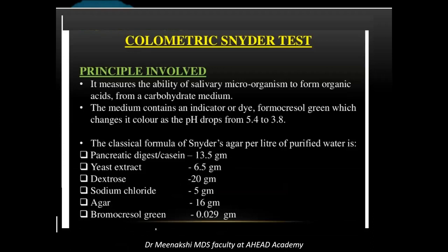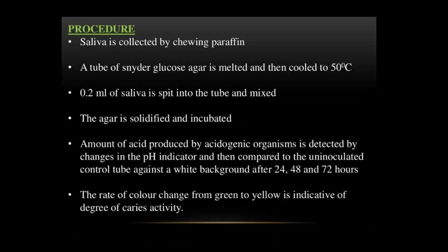Next comes the Nider colorimetric test. It measures the ability of salivary microorganisms to form organic acids from a carbohydrate medium. The classical formula of Nider agar per litre of purified water contains: casein or pancreatic digestive juice, yeast, dextrose, sodium chloride, agar, and bromocresol green medium — which contains the indicator dye. This dye, bromocresol green, changes its color when pH drops from 5.4 to 3.8. After chewing paraffin, saliva is collected, the tube of Nider agar is melted and cooled to 50°C, and 1 ml of saliva is added to the tube and mixed.